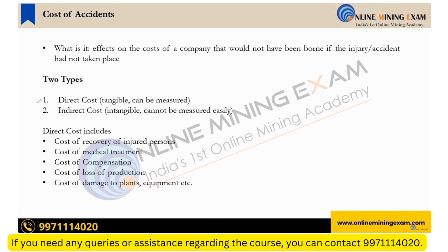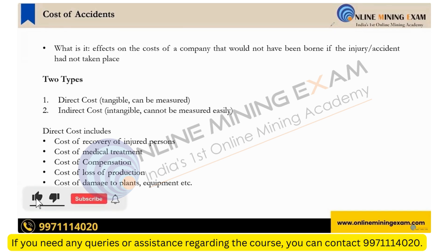Cost of accident can be two types: direct cost or indirect cost. Direct cost is tangible — you are able to see that this is a cost. Indirect cost is what you cannot directly see, but the company has still incurred it. For example, suppose a person falls sick for one day — the direct cost is the medical expense, and the indirect cost is that he could not go to work and could not earn that day's wages.